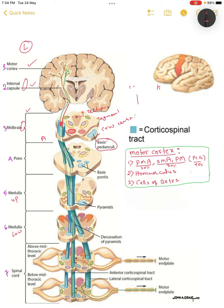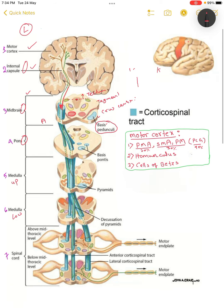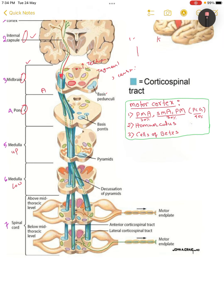Now the descending fibers have passed the midbrain and enter the pons. At the level of the pons, these fibers are spreading out. Why are the fibers spreading? Because there are obstructions — the pons has many pontine nuclei, which is why it is swelled up. That is the reason the descending fibers spread here and form small bundles. These bundles are known as the basis pontines.